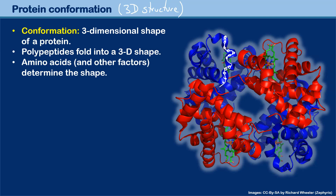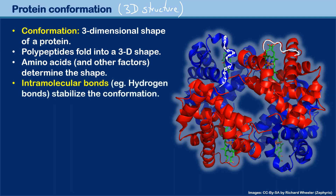There are also some regions where they don't spiral — for example, at the top. That is a simplified representation of a protein so that you can see the three-dimensional structure much better. So-called intramolecular bonds — for example, hydrogen bonds — stabilize the conformation.